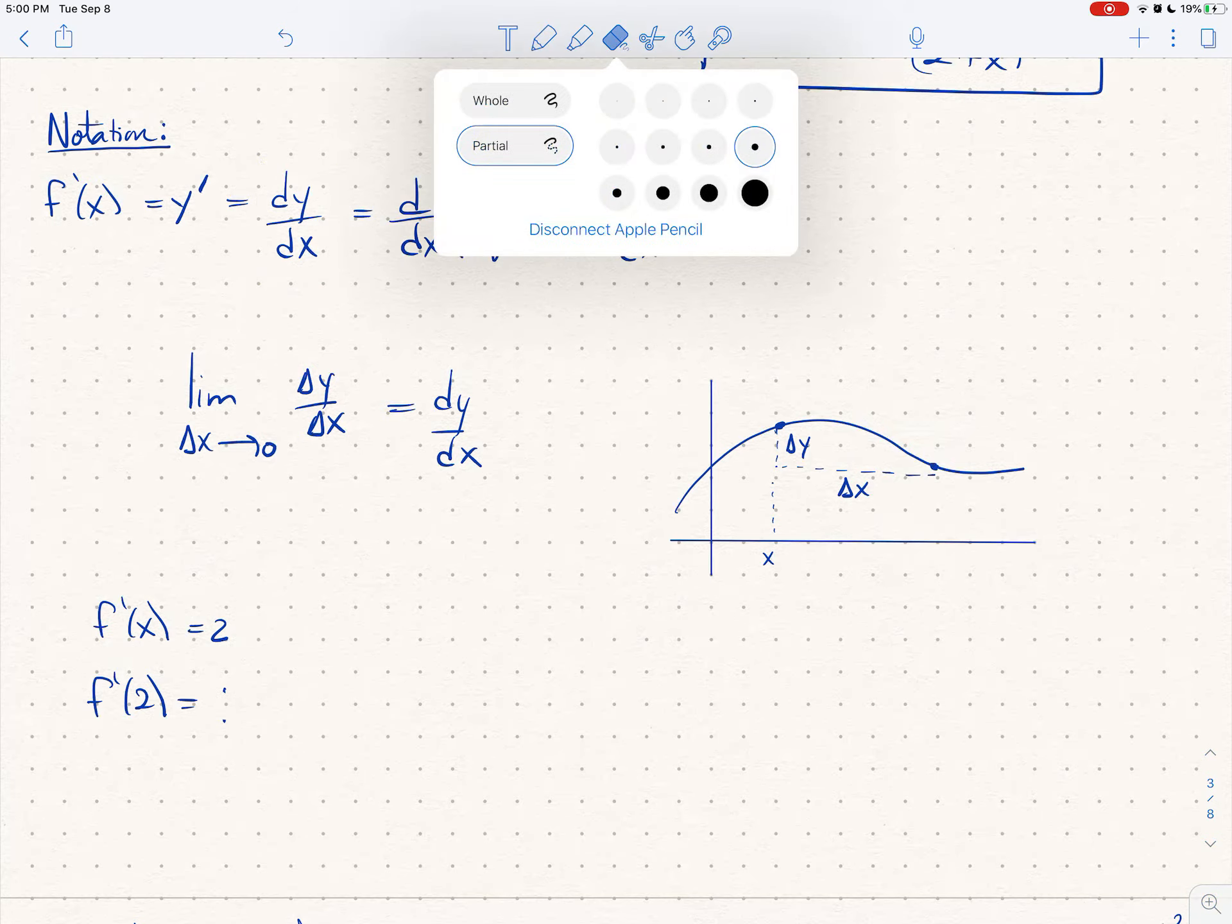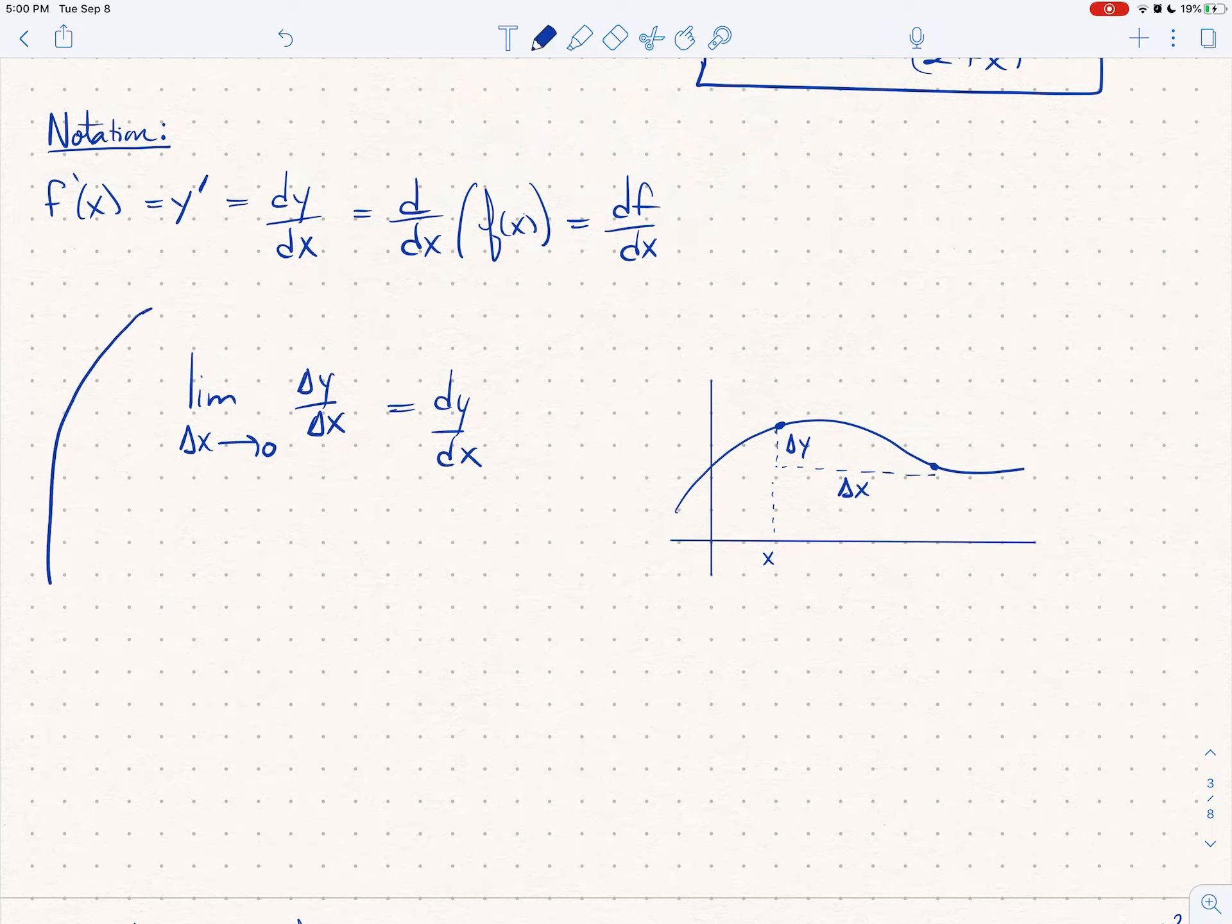So I'm going to erase this and say, we'll just draw an arrow down here, and we'll say f prime of a, evaluating the derivative at x equals a, is the same thing as writing dy dx, and we'll draw a bar evaluated at x equals a. When you see a bar like this after an algebraic expression, that's usually an evaluation bar, and it just means plug this into whatever the previous expression was.